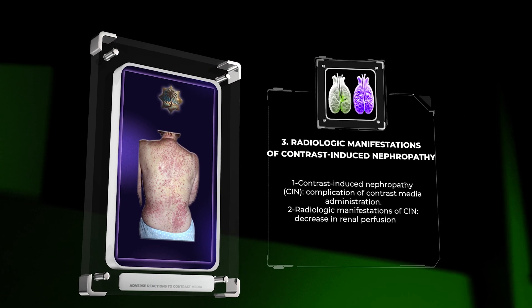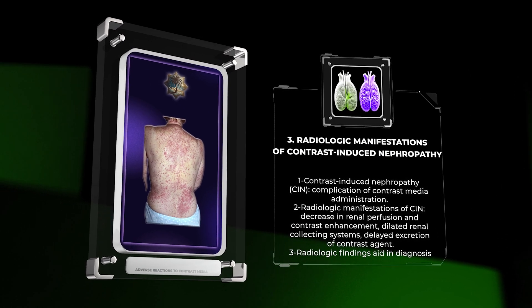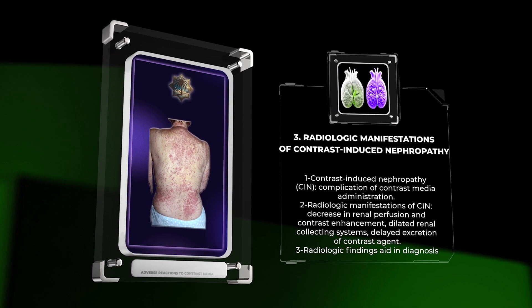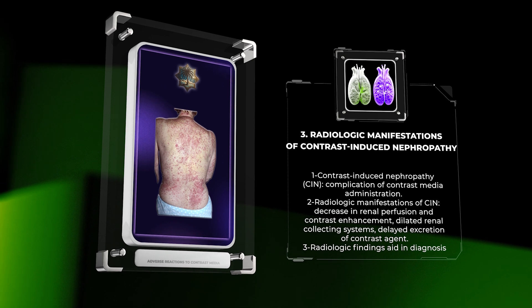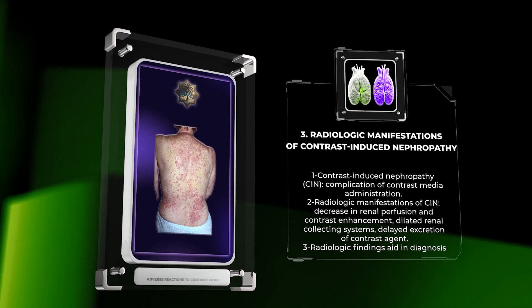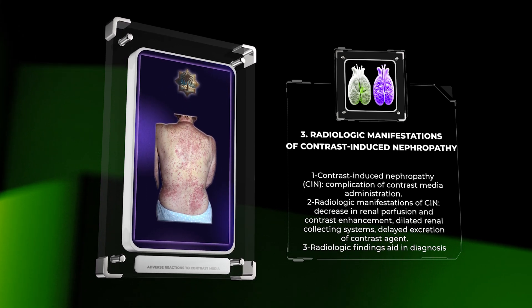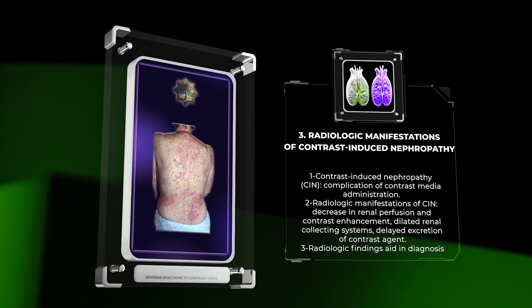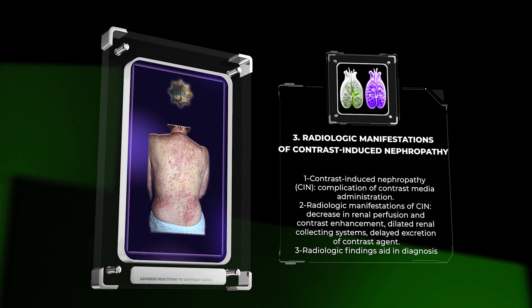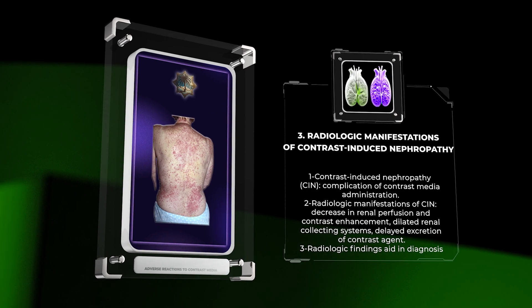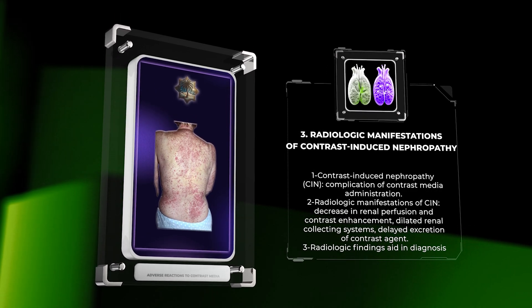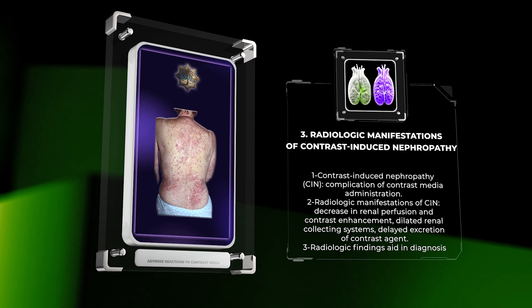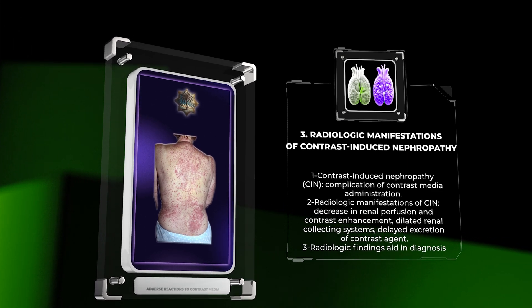Contrast-induced nephropathy (CIN) is a well-known complication of contrast media administration, particularly in patients with pre-existing renal impairment. Radiologic manifestations of CIN can be observed on imaging studies, including computed tomography (CT) scans and magnetic resonance imaging (MRI). The main findings include a decrease in renal perfusion and contrast enhancement, dilated renal collecting systems, and delayed excretion of contrast agent. These radiologic findings aid in the diagnosis and management of CIN.